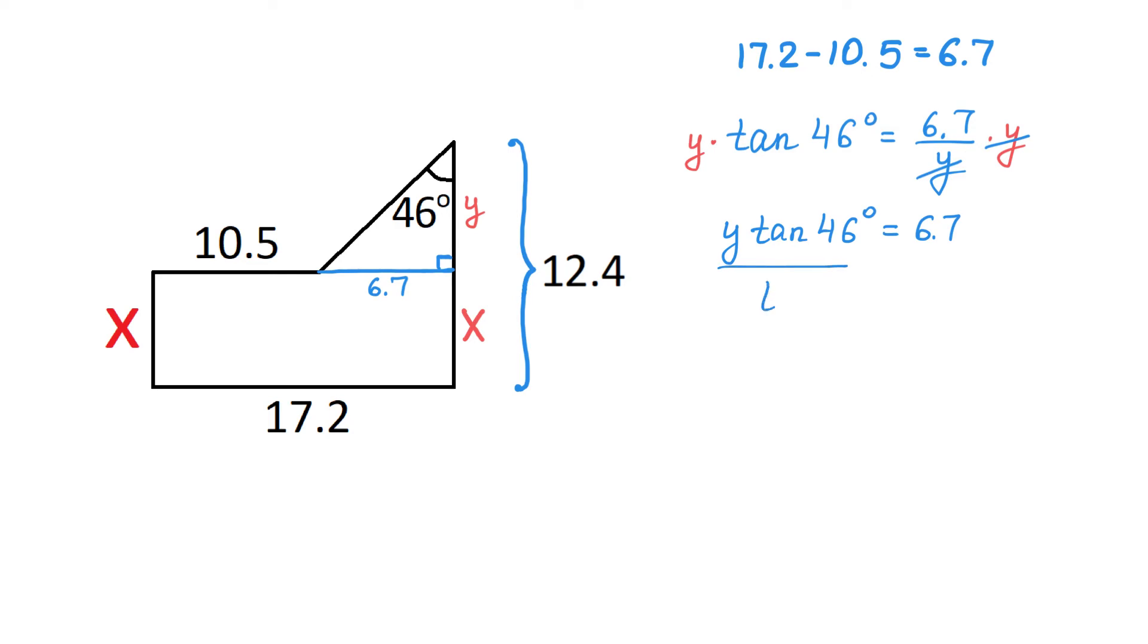we divide both sides by tangent of 46 degrees and on the left side, tangent will cancel and we will have Y equals 6.7 divided by tangent of 46 degrees.